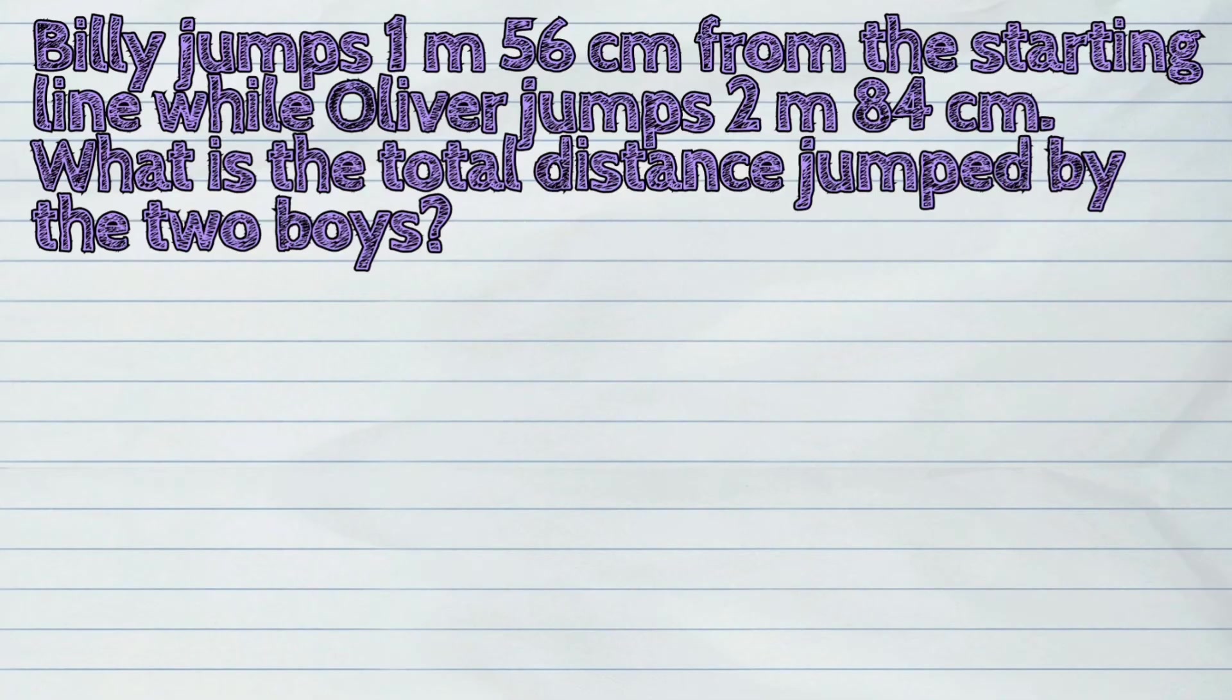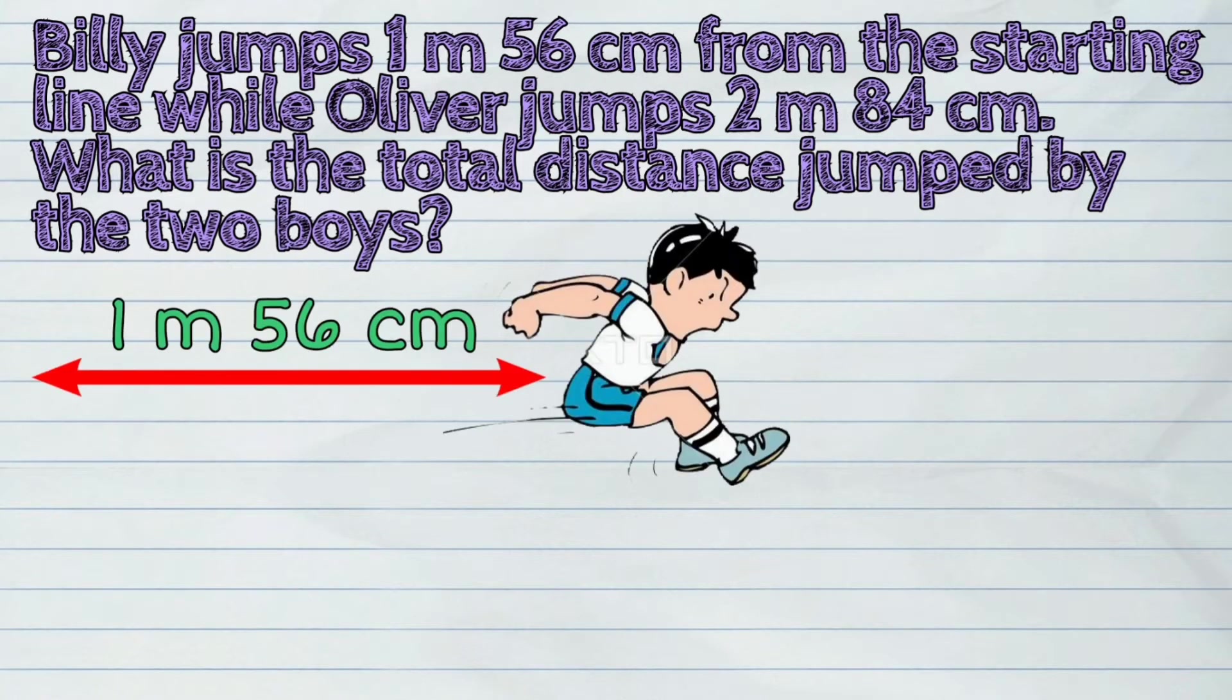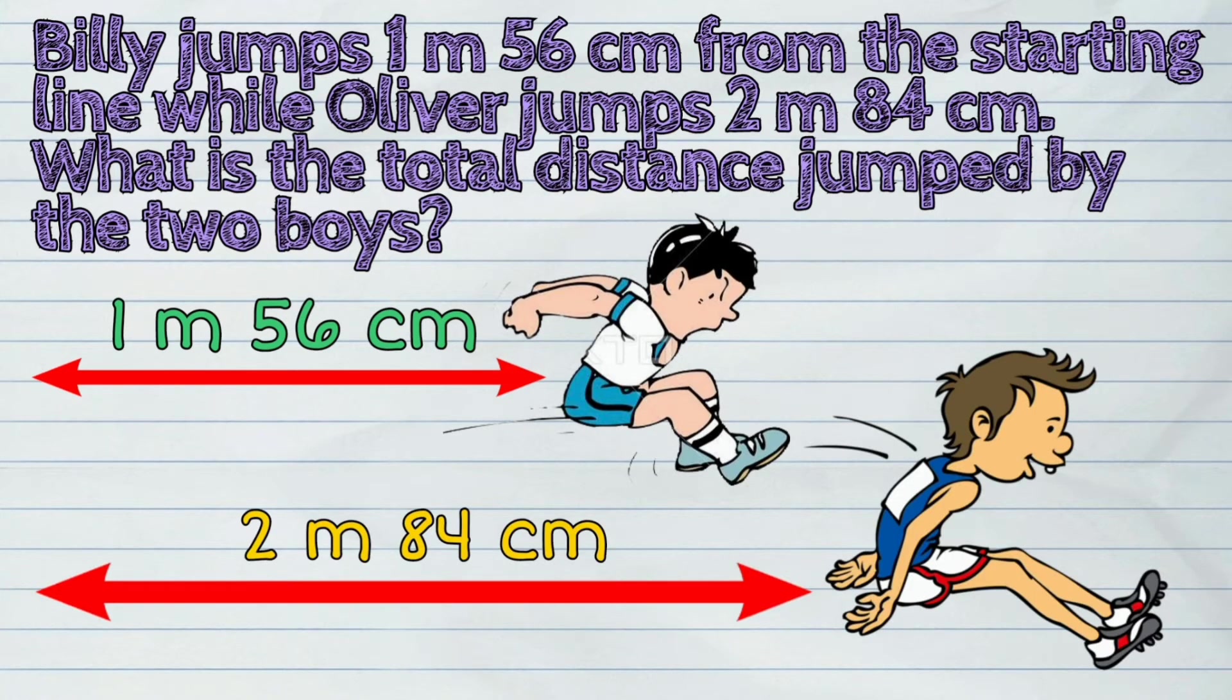Let us have another example. Billy jumps 1 meter and 56 centimeters from the starting line, while Oliver jumps 2 meters and 84 centimeters.